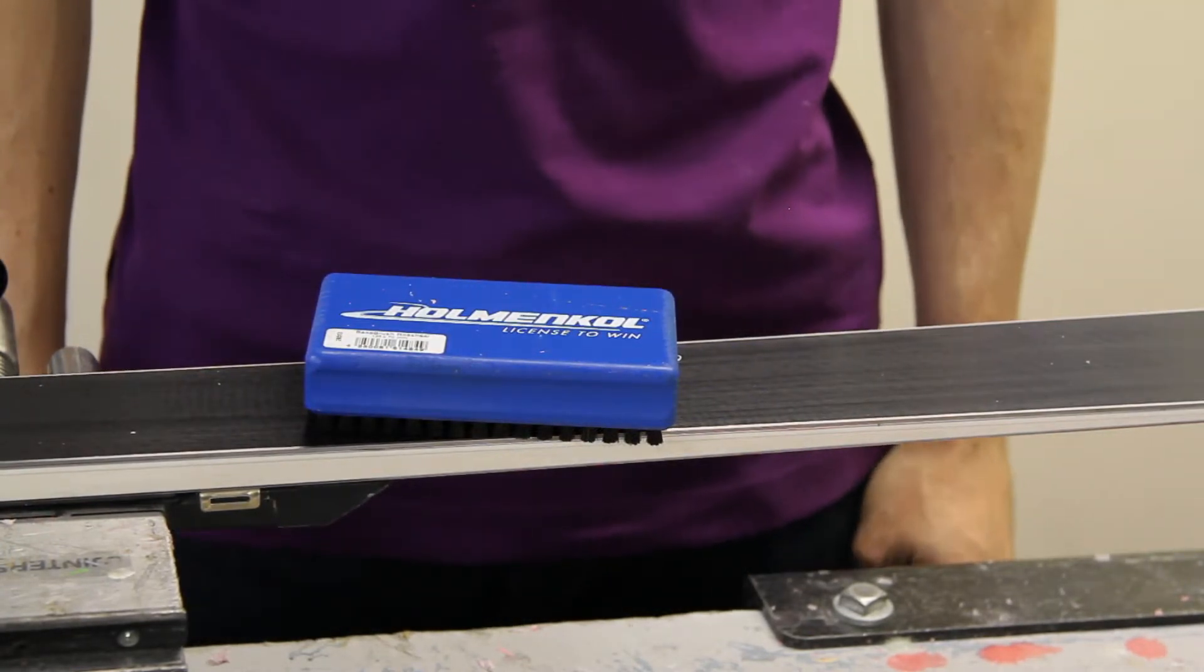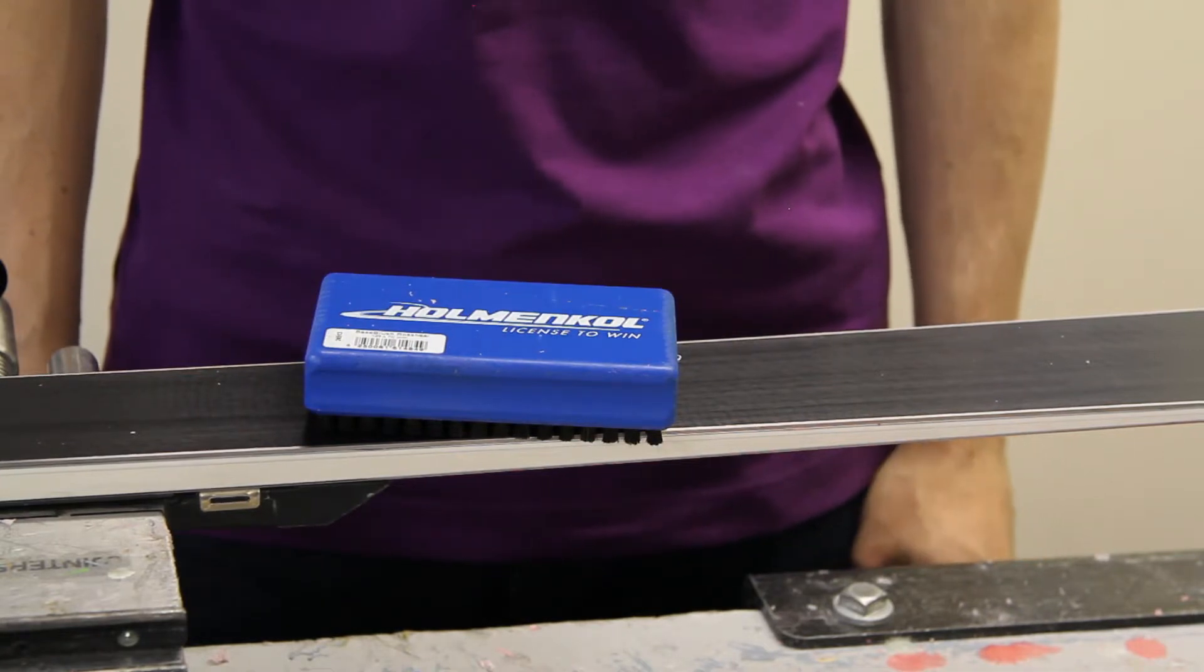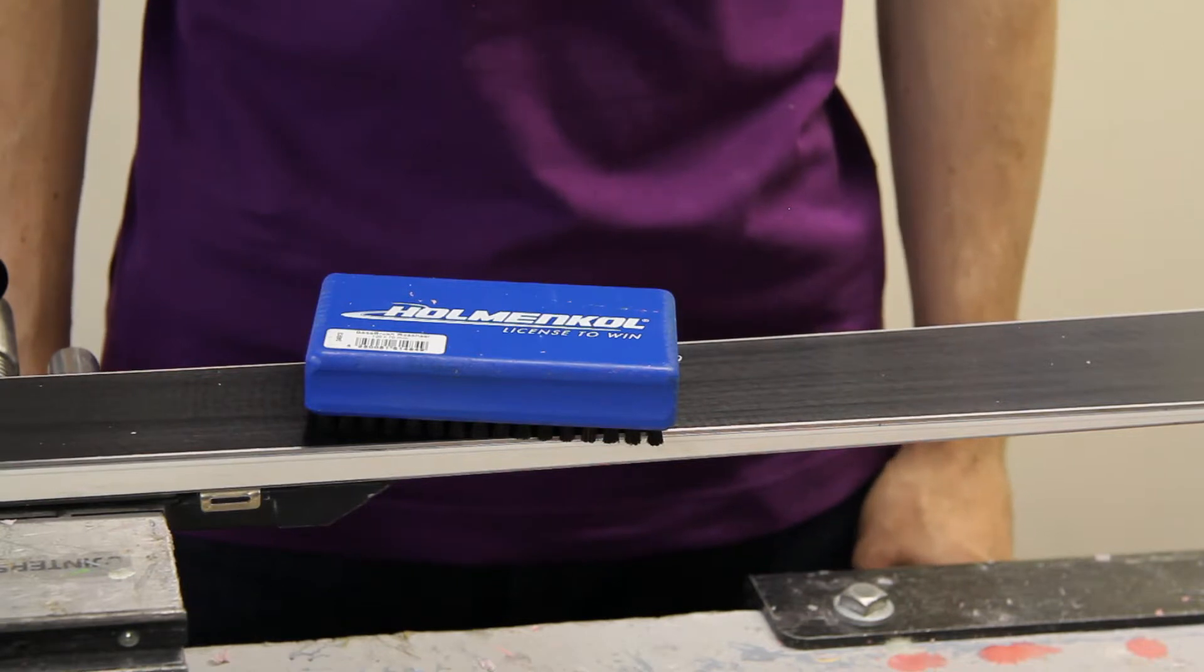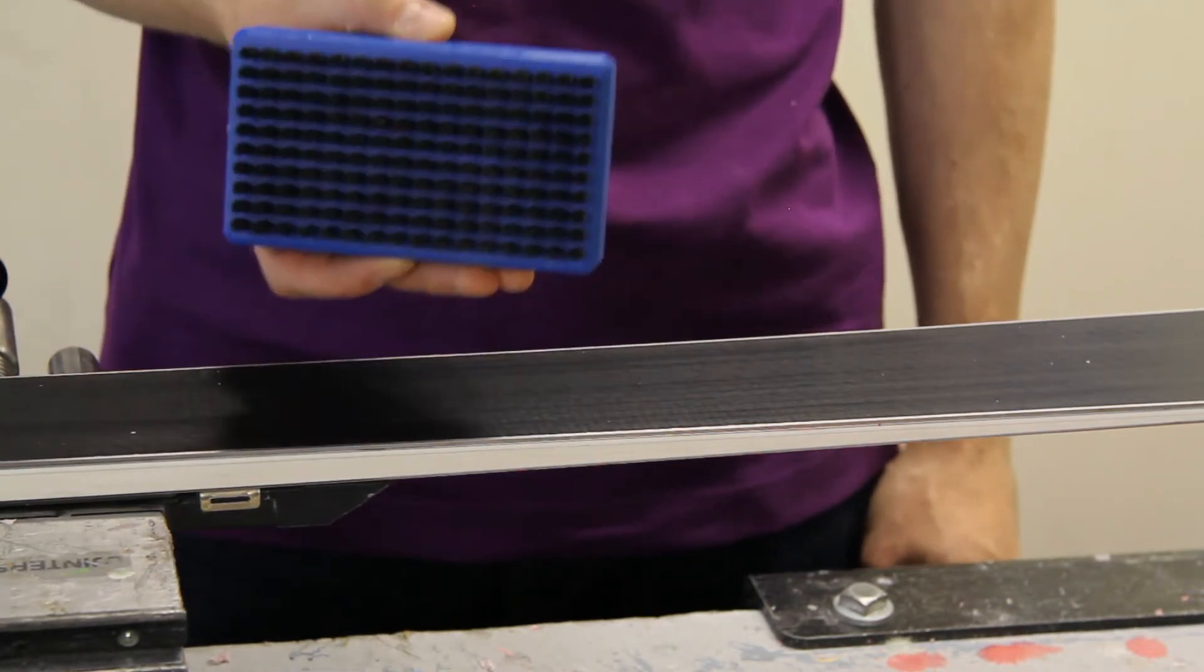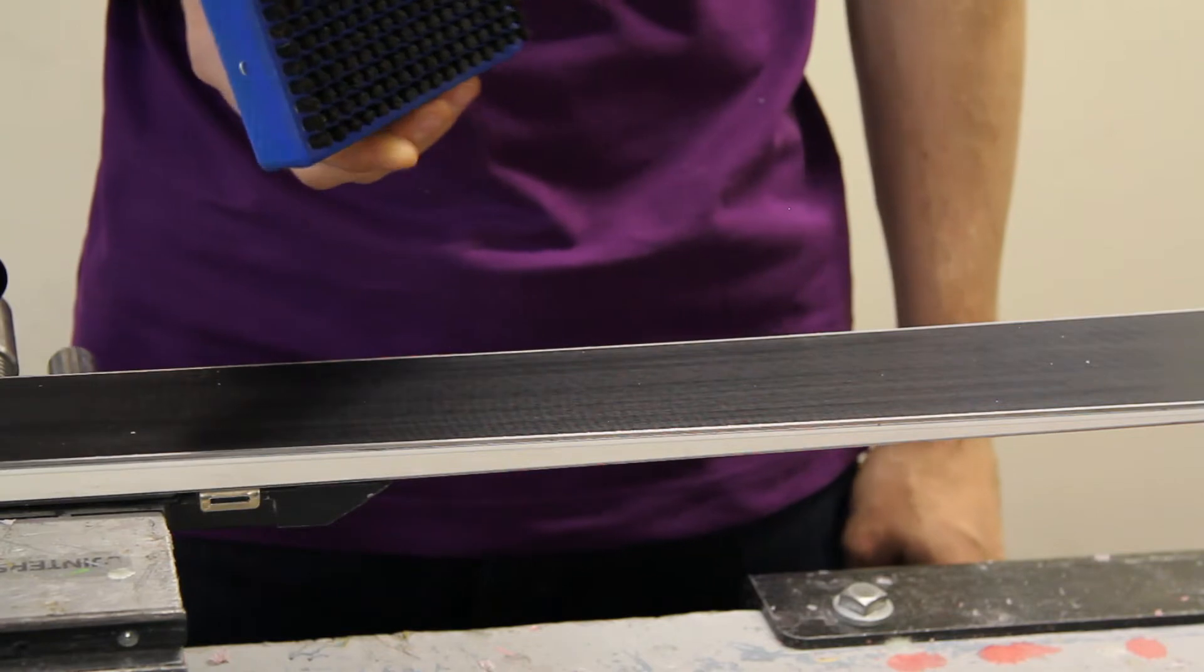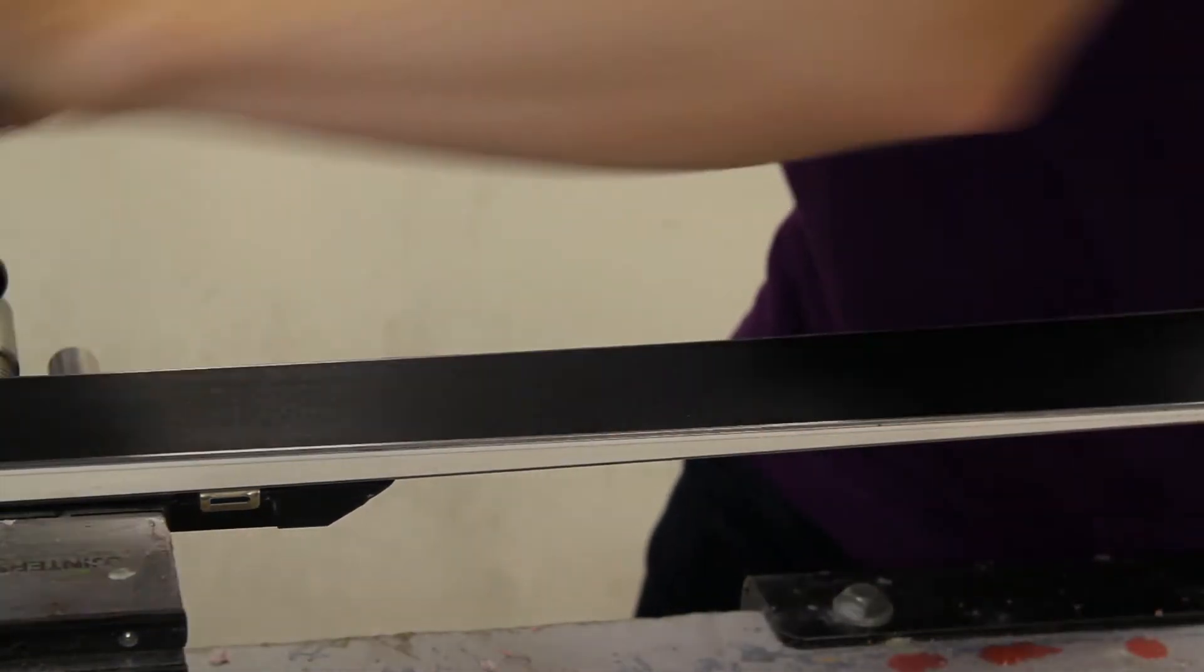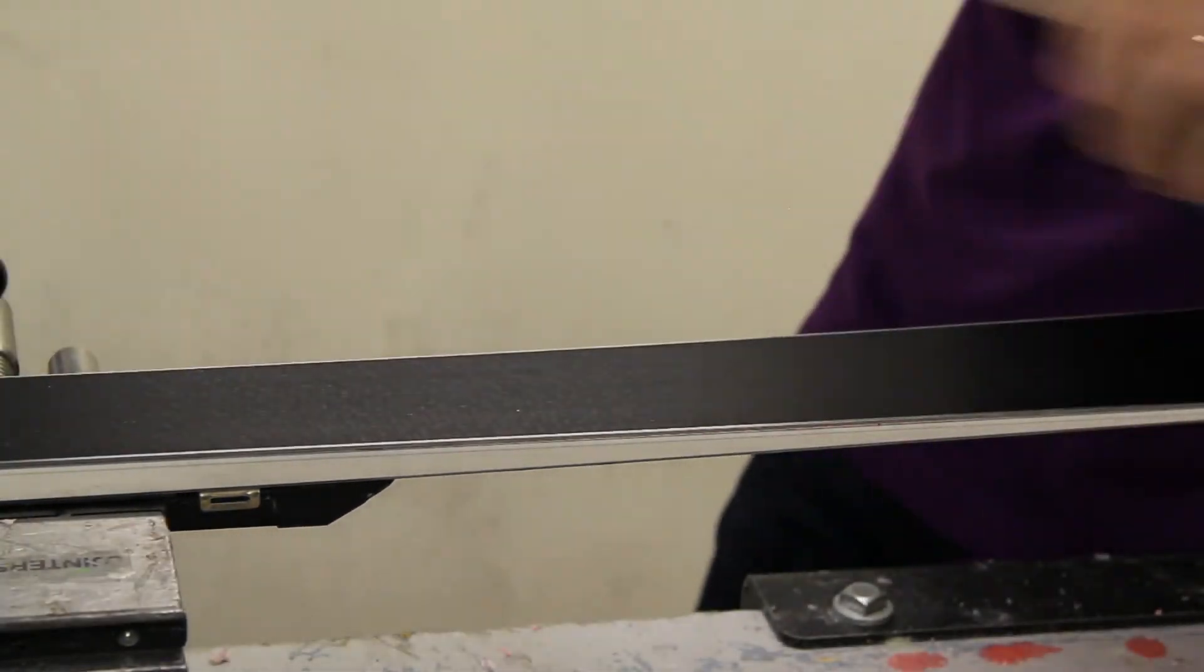The final stage of the hot wax process is to use a waxing brush. This helps to remove any excess wax and also polish the base. This is a horse hair brush, which is short fibre, which will help us to achieve a very dark and glossy shine. Always work in directional strokes, lifting off at the end and then reapplying pressure at the beginning.